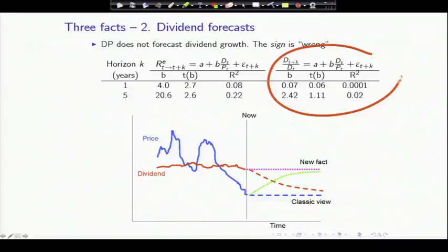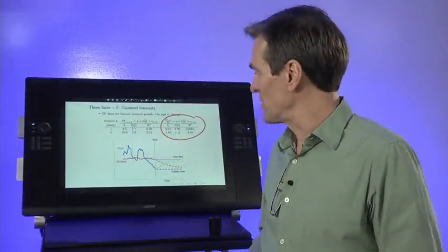Compared to that, this is the dividend growth forecast. What happens if we try to forecast dividend growth with price-dividend ratios? And you see nothing there. Dividend growth just isn't forecastable. The R-squared is tiny, the t is tiny, the sign is wrong. What you would expect is a high price relative to today's dividends to tell you tomorrow's dividends would be higher. Or conversely, a negative sign, a high dividend yield says tomorrow's dividends should be lower. In fact, it's the other way around.